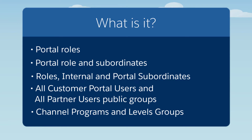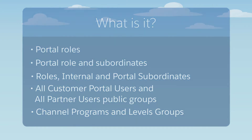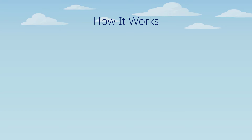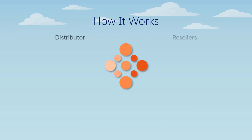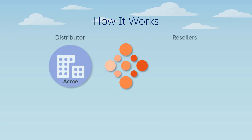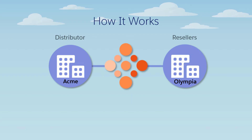Let's take a look at a couple of examples of how to use sharing rules to grant access to records in Experience Cloud sites. Pacifica has a variety of partners, including distributors and resellers. Acme is a distributor, and Olympia is a reseller. Acme needs to manage opportunities created by Olympia.